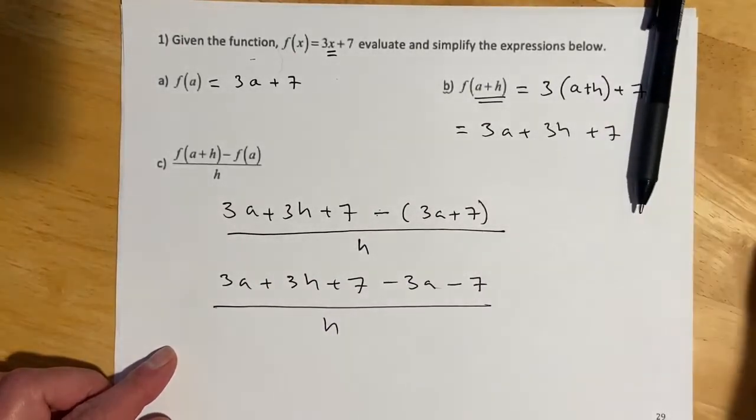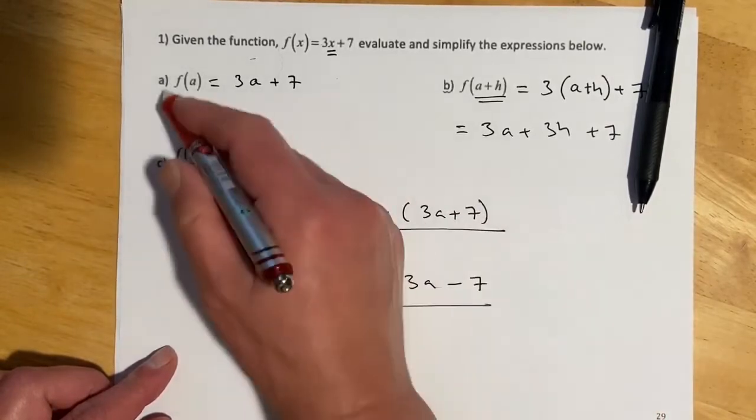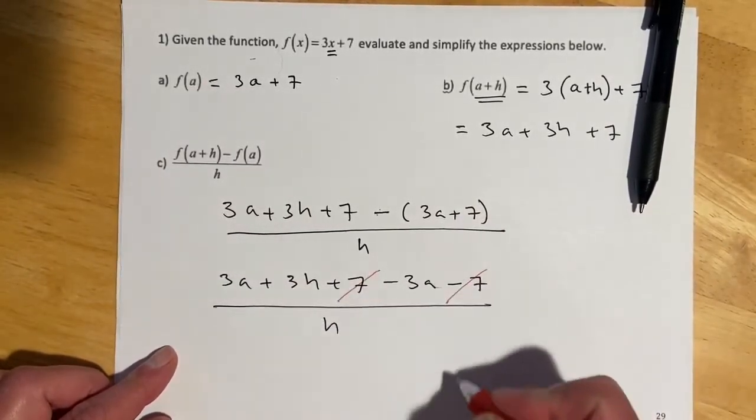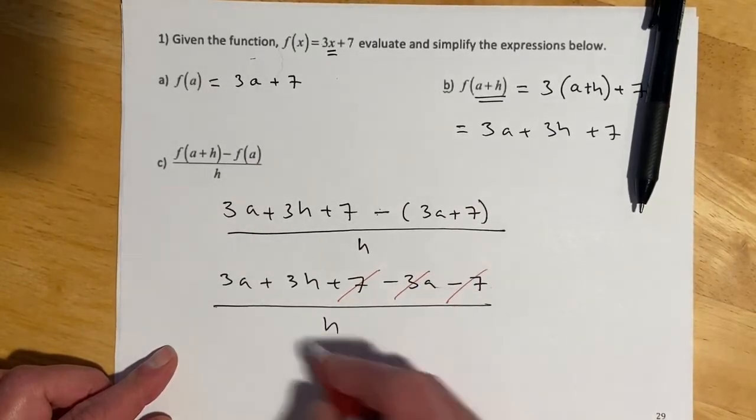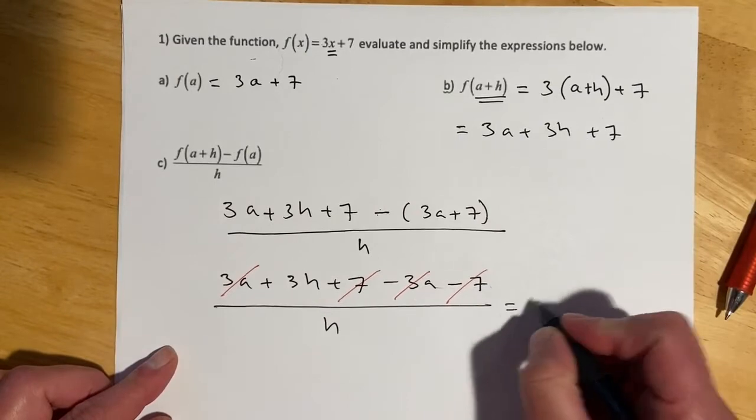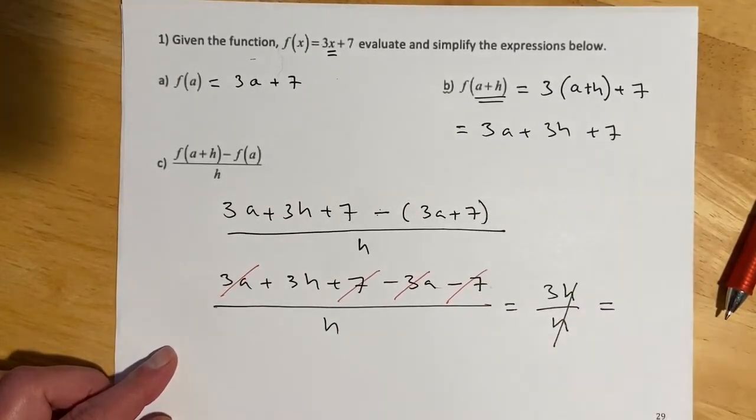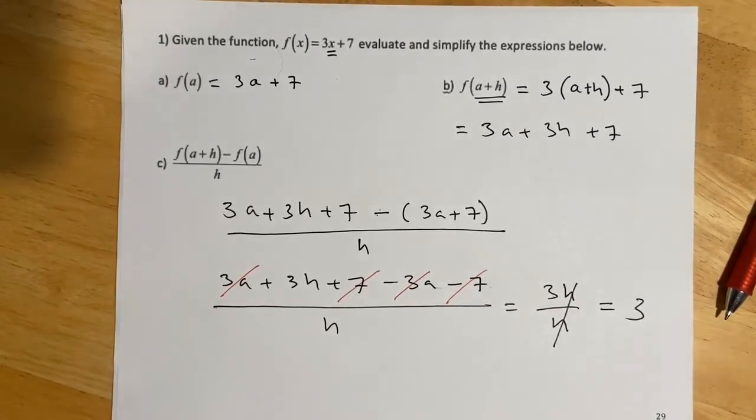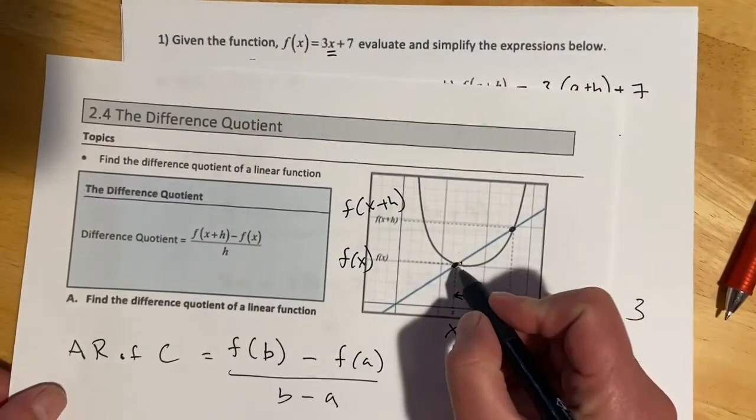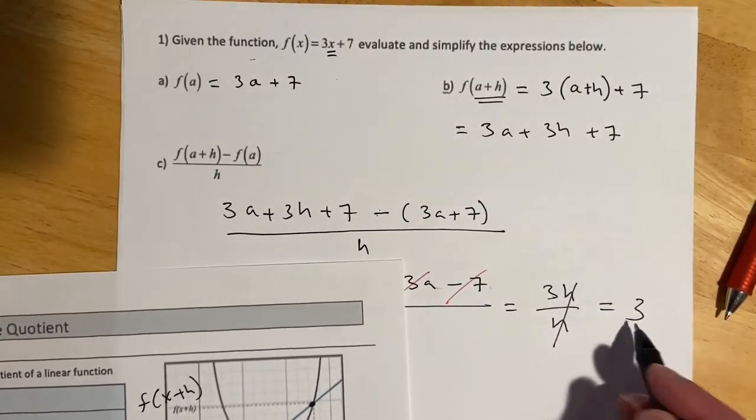Something that should happen when you do the difference quotient is that the stuff in the parentheses here, the f of a or f of x in my notes, it should cancel. So I got a plus 7, I got a minus 7, I got a minus 3a, I got a plus 3a. So then what's left is 3h over h. h is cancelled. That should also happen. And we end up that the difference quotient is 3, which, remember back here, we were saying the difference quotient is the slope, and the slope of that line is 3. So I really should come up with 3 on this. I should always get the slope, assuming we're doing something linear.